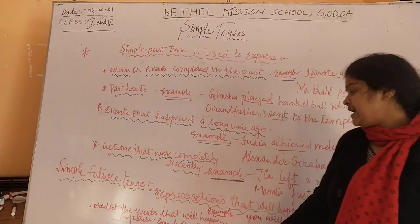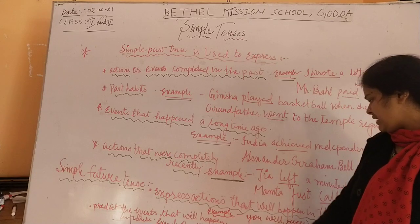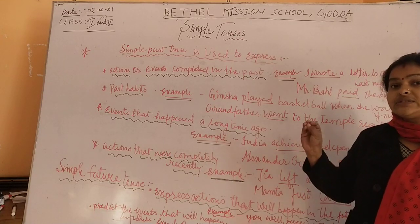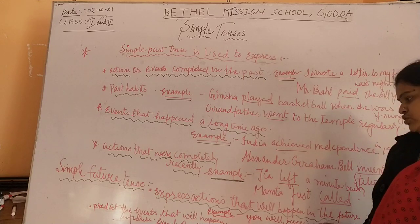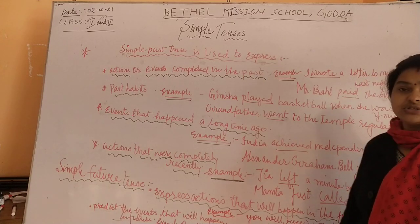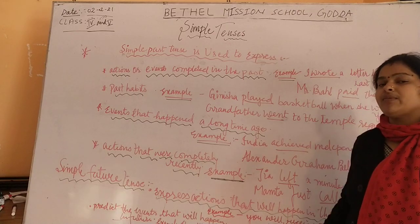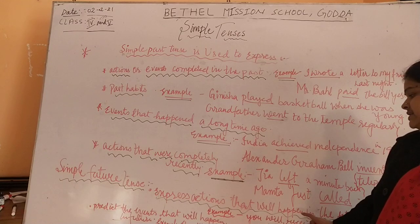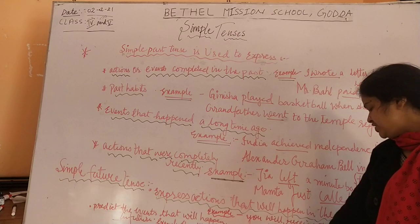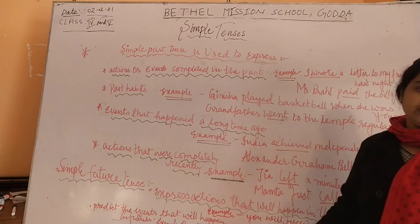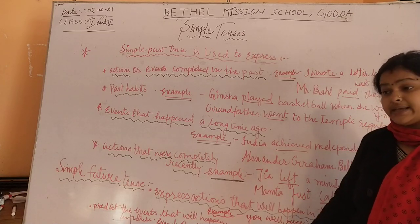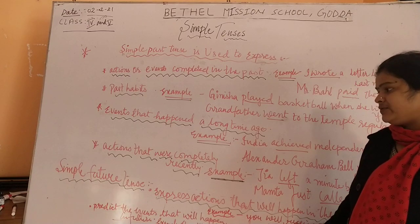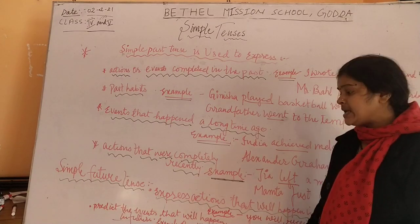Simple future tense: it is used to express actions that will be happening in the future time. Future tense expresses the action which will take place in future time. For example, you will receive the book by post — the book will come in the future time. We shall fly to London next week — we are planning to fly to London next week. 'Will receive' and 'shall fly' are the highlighted words showing the future tense.